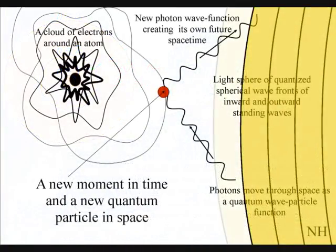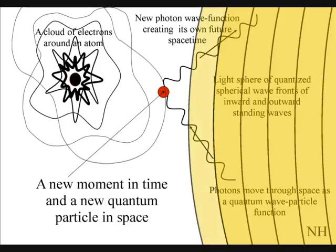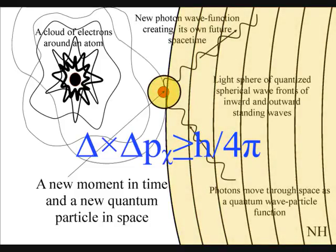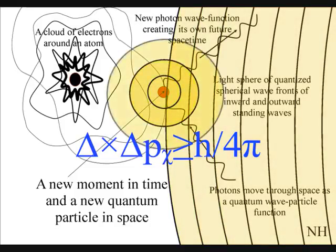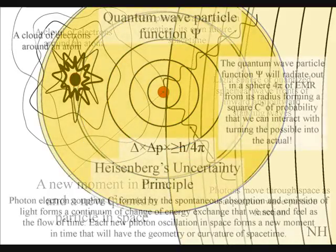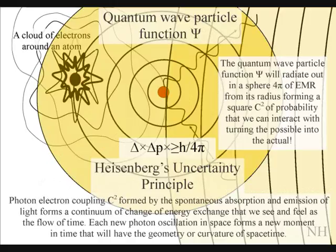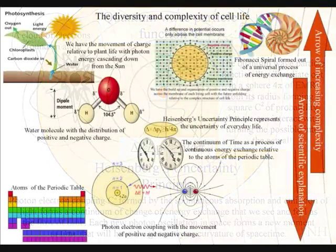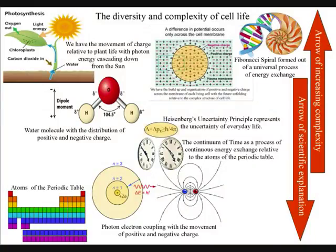In such a process we would have new vibrations continuously coming into existence, and others decaying away and becoming part of the past. This is the universal concept or physical property of the universe that forms Euler's number E.